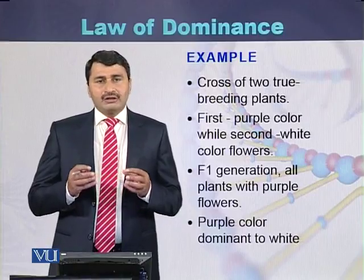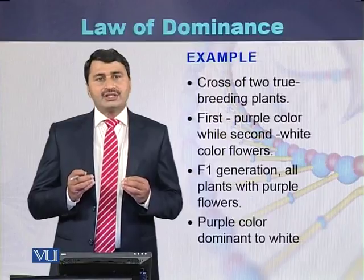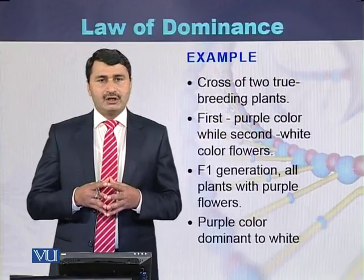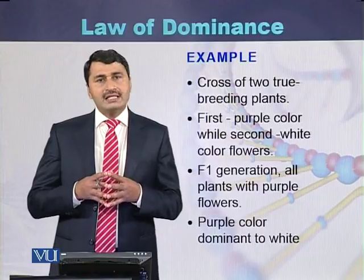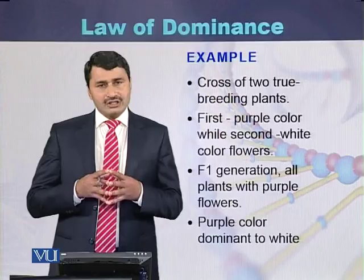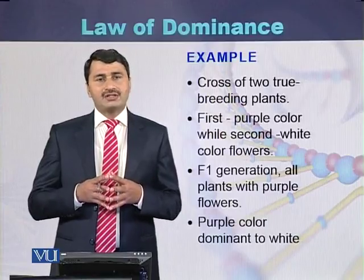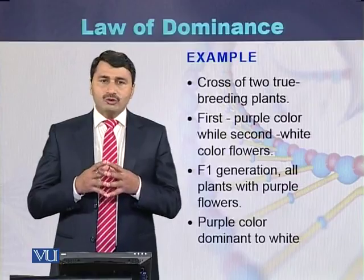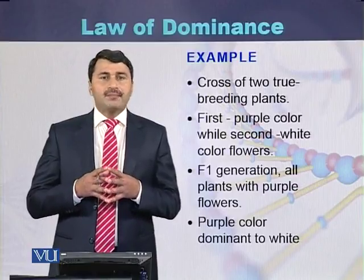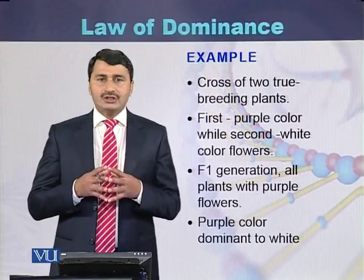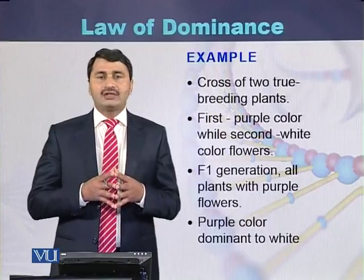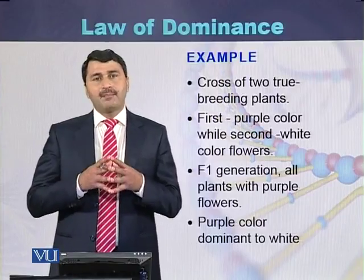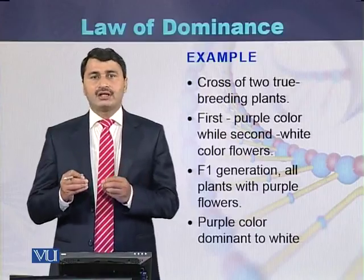the plants produced in the F1 generation will show that one version — the white color flower — will disappear. Only plants producing purple color flowers will be produced in the F1 generation. This law is called the law of dominance, meaning some traits are dominant and some are recessive. In this example, purple color flower is dominant over white color flower.